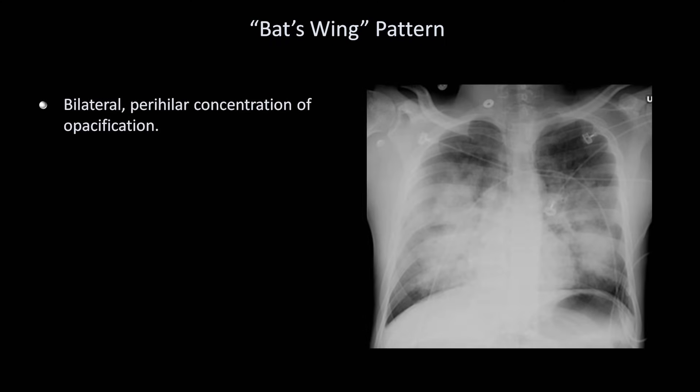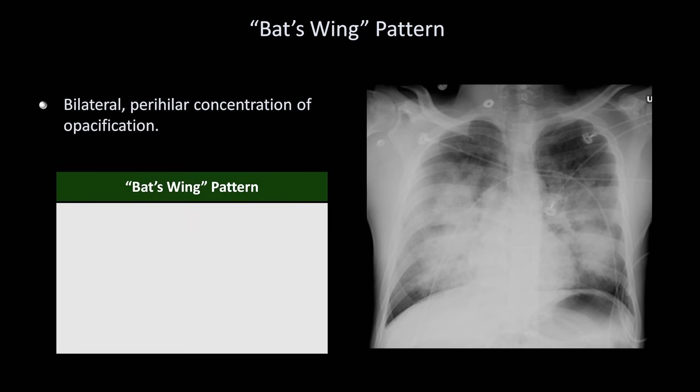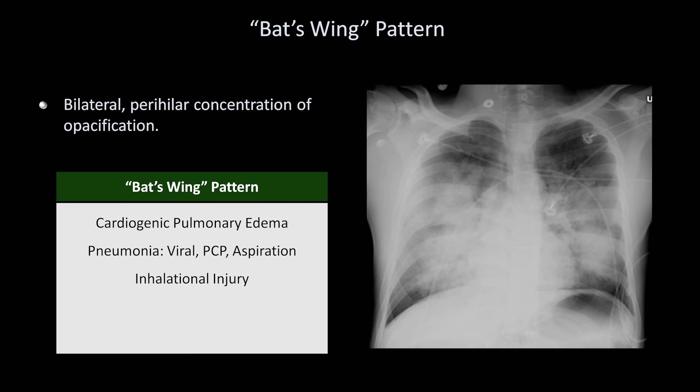Lastly is the so-called bat's wing pattern of opacification, sometimes referred to alternatively as a butterfly pattern or angel's wings. This refers to bilateral perihilar concentration of opacification. This is seen predominantly in cardiogenic pulmonary edema, but also in some types of pneumonia, particularly viral, PCP, and aspiration. It can be seen in inhalational injury, pulmonary alveolar proteinosis, and in pulmonary hemorrhage.